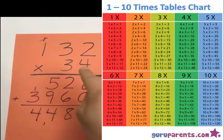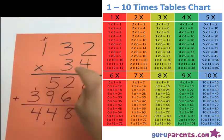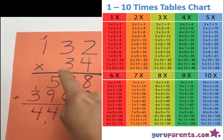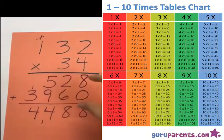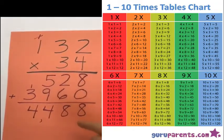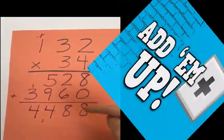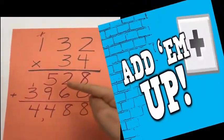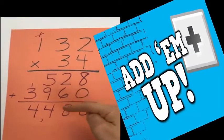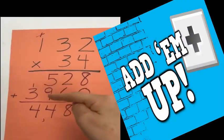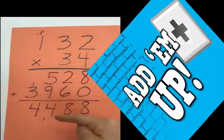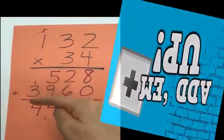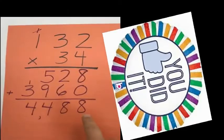Now that I have my two rows of numbers — the four times each of the top numbers, and the three times each of the top numbers — I can add them up. Eight plus zero is eight, two plus six is eight, five plus nine is fourteen so I carry the one and write four, one plus three is four. So the answer is four thousand four hundred eighty-eight.